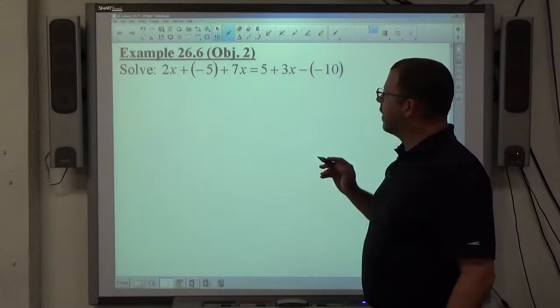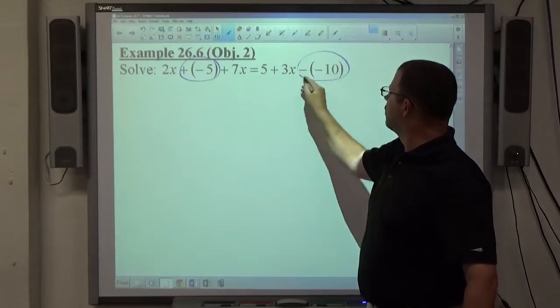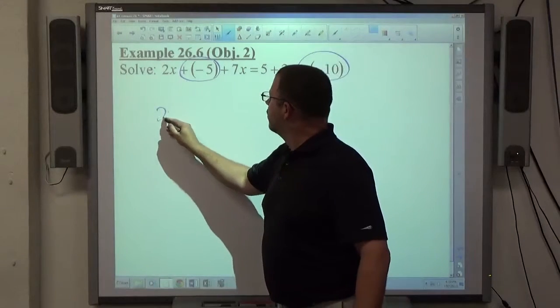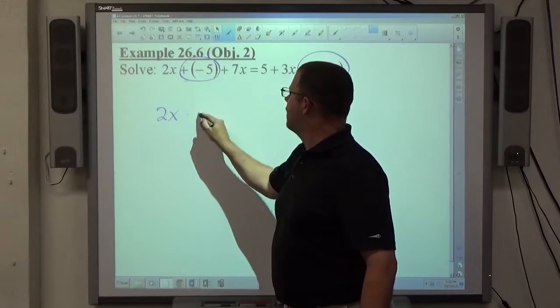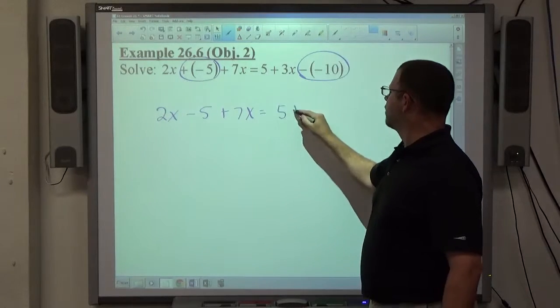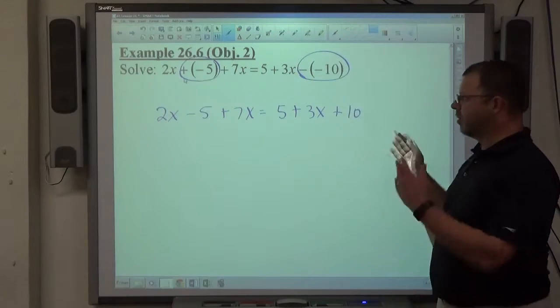Before I start dealing with like terms, I probably want to deal with this plus negative and minus negative situation. I'd like to have a simpler structure, so 2x plus negative 5 means minus 5 plus 7x. We get 5 plus 3x, and minus minus 10 makes plus 10. So we'll get into a simpler structure.